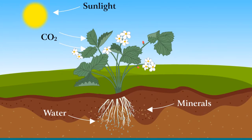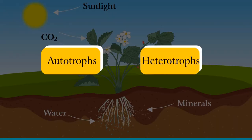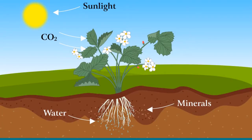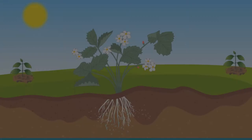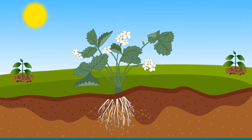Plants get their nutrition in different ways. Plants can broadly be classified into autotrophs and heterotrophs. Plants that make their own food are called autotrophs. This mode of nutrition is known as autotrophic nutrition. 'Auto' means self, 'trophine' means to nourish. Autotrophs synthesize food by converting simple chemical substances like water and carbon dioxide into glucose. This glucose is further converted into many complex substances with the help of minerals.